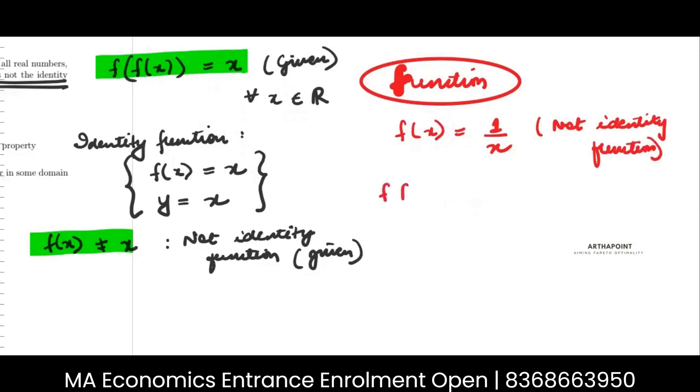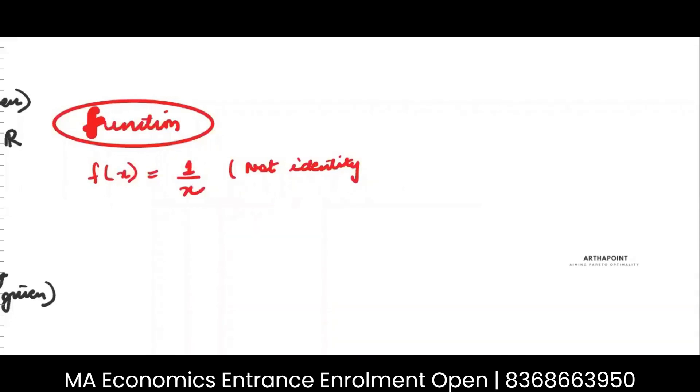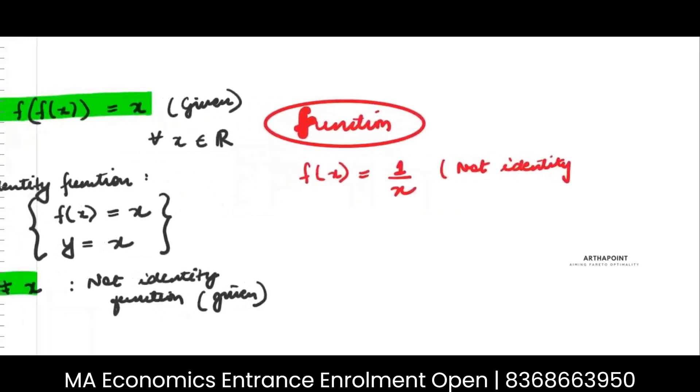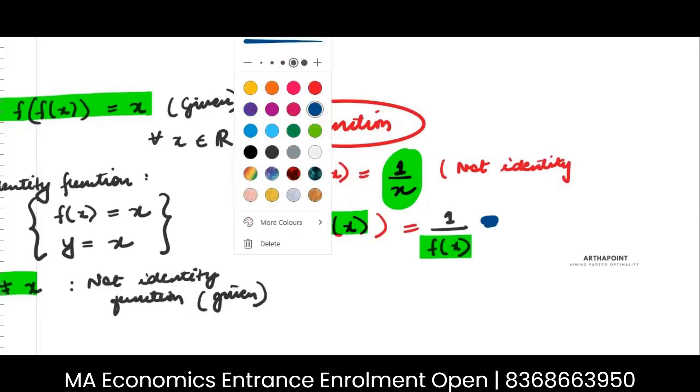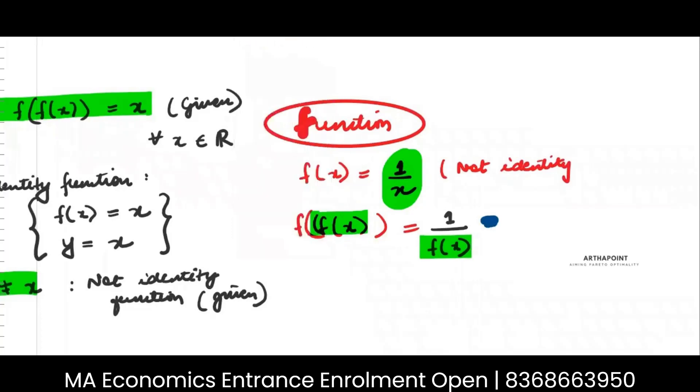Now, what I do is I find f of f of x, which means wherever my x is there, instead of x, I will put f of x. So let's go ahead and do that. I want to find f of f of x. Instead of x, I will put f of x. So I will get 1 upon f of x. f of x in itself was 1 by x. So this will be 1 by 1 by x, which will be x.